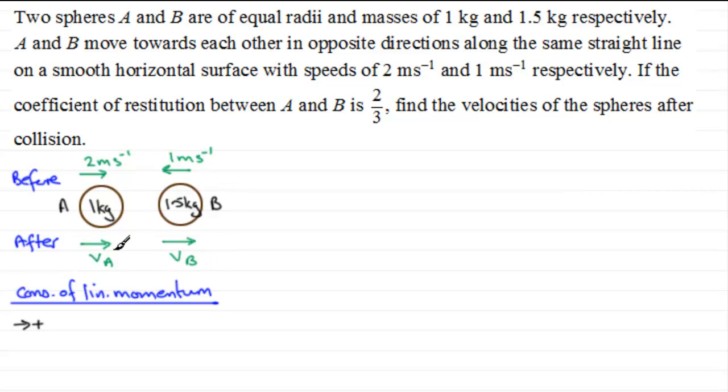So momentum before impact, that would be the mass of A, which is 1, multiplied by the velocity, which is going to be positive 2, plus the momentum of B, which is its mass, 1.5, times its velocity, which is going to be negative 1, because it's in the opposite sense to that. And this is equal to the momentum afterwards, the total momentum after impact. So it's going to be the mass of A, which is 1, multiplied by positive V_A.